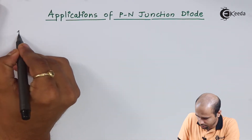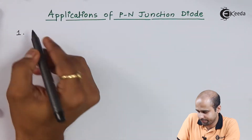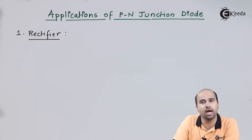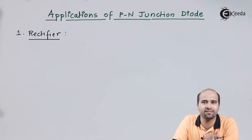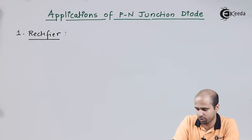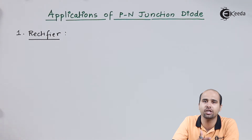The first application is the rectifier. A diode is used in a rectifier circuit. Before learning that, you should know what a rectifier is. Basically, a rectifier is a circuit which is used to convert an AC signal into a pulsating DC signal.